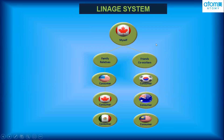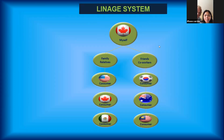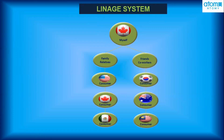If I am at the top, what I'm going to do is create and build my consumer base as large as possible. As simply as: I use the product, I love the product, and I introduce our shopping mall to friends or relatives, then register them under me — my ID will be their sponsor ID. In the Atomy system, the first person you register goes to the left side, the second goes to the right side.